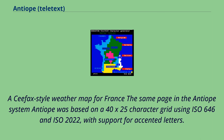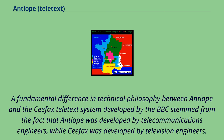Antiope was based on a 40x25-character grid using ISO 646 and ISO 2022, with support for accented letters. A fundamental difference in technical philosophy between Antiope and the CFAX teletext system developed by the BBC stemmed from the fact that Antiope was developed by telecommunications engineers, while CFAX was developed by television engineers.